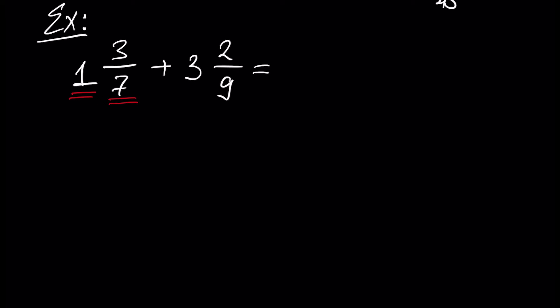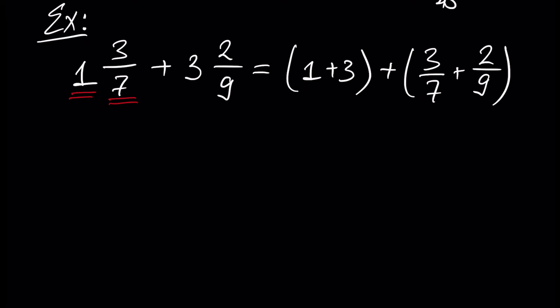It's very easy. We first have to separately add the whole parts: 1 plus 3. And then we separately add the fractional parts: 3 over 7 plus 2 over 9. This will give us 4 for the whole part, and let's perform the fractional part: 3 over 7 plus 2 over 9.